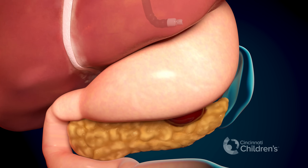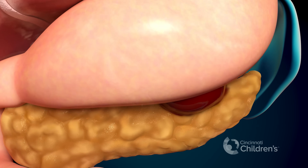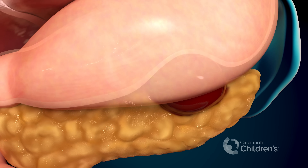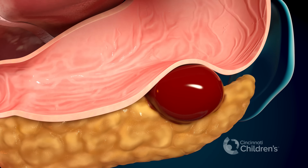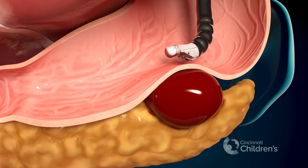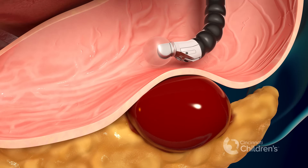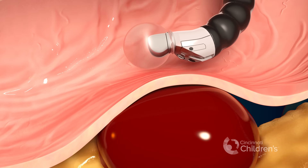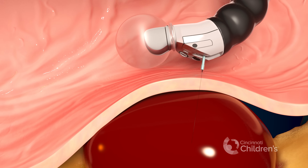In addition to biopsies, endoscopic ultrasound guidance can be used for drainage of pancreatic pseudocysts or walled-off pancreatic necrosis, along with other intra-abdominal fluid collections. Here, a needle is passed through the stomach wall into a pancreatic pseudocyst, followed by a wire through the needle.